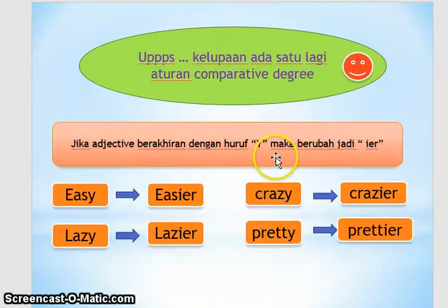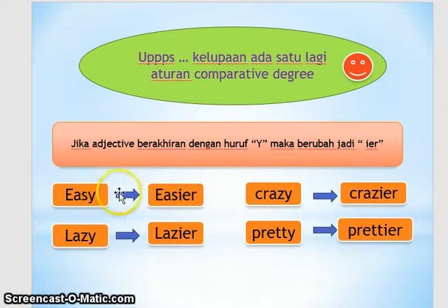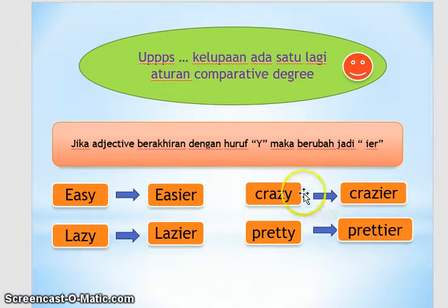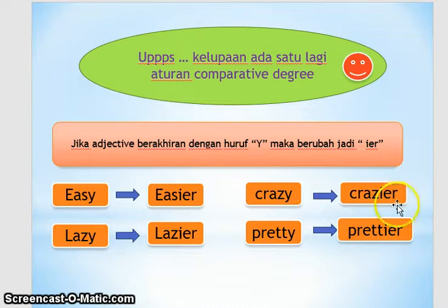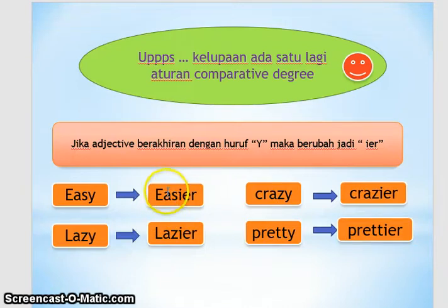Ada satu aturan lagi: kalau kata sifatnya diakhiri dengan huruf -y, maka -y berubah menjadi -ier. Contohnya: easy → easier, lazy → lazier, crazy → crazier, pretty → prettier. Jadi 'easy' (gampang) menjadi 'easier' (lebih gampang). Contoh kalimat: 'English is easier than math,' atau 'Indonesian language is easier than English' — bahasa Indonesia lebih gampang daripada bahasa Inggris.